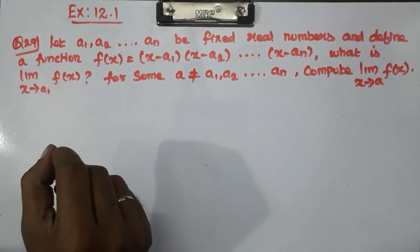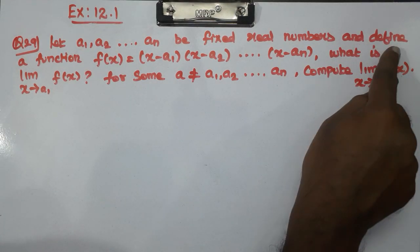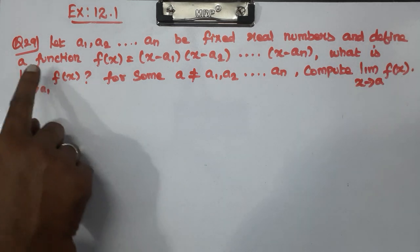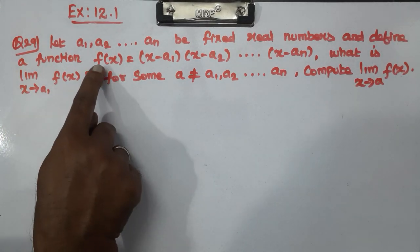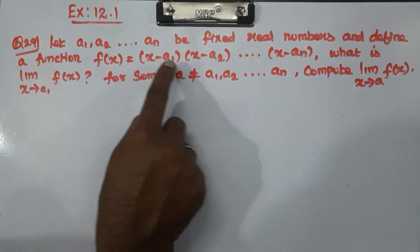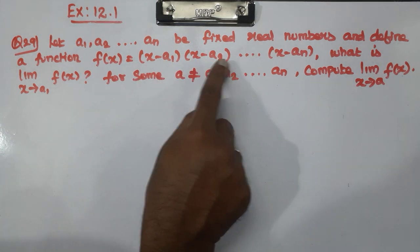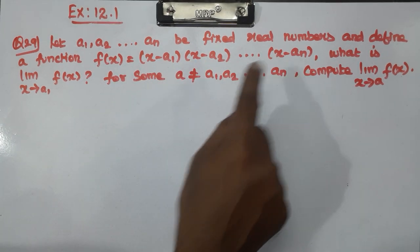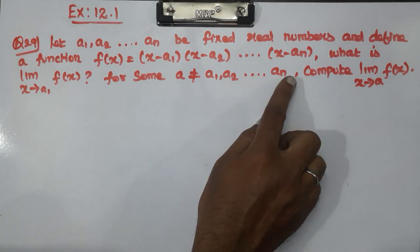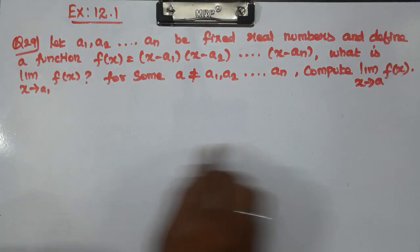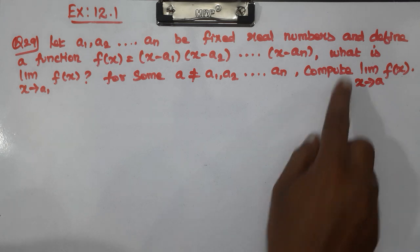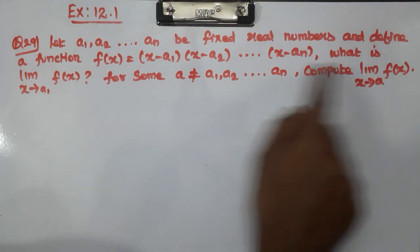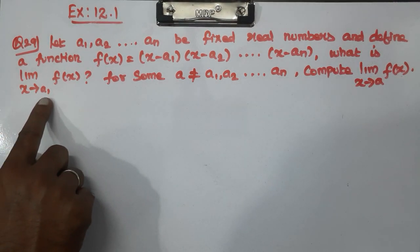Define a function. How is this function defined? The function is given as (x - a1)(x - a2)...(x - a1). This function has a limit point. You can take the product. What is the limit as x tends to a1?